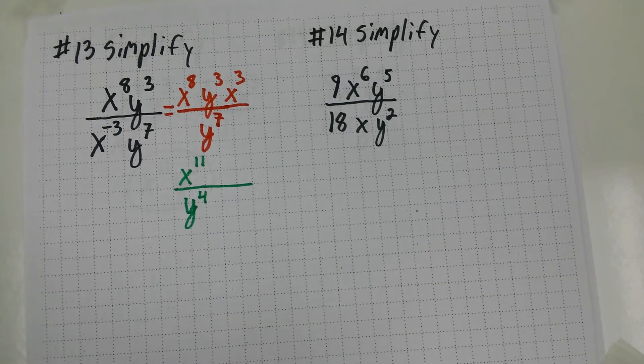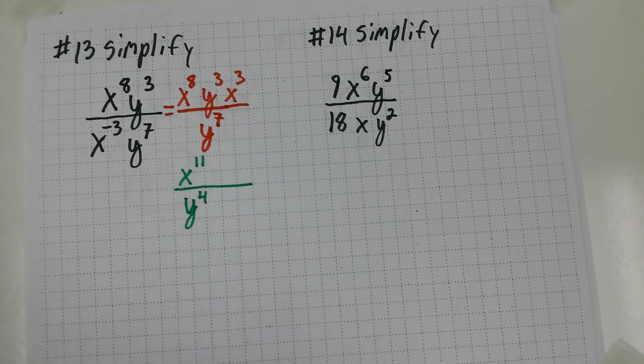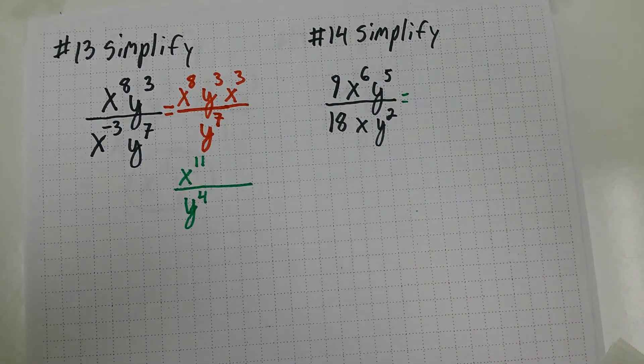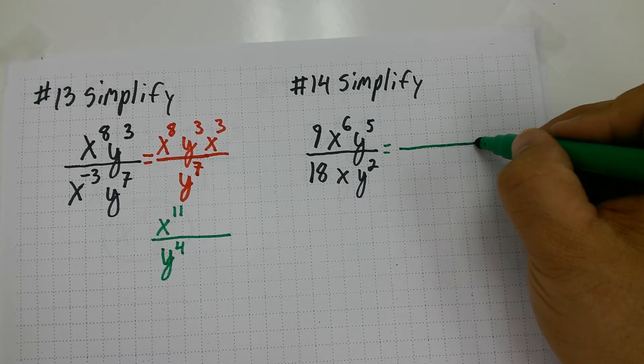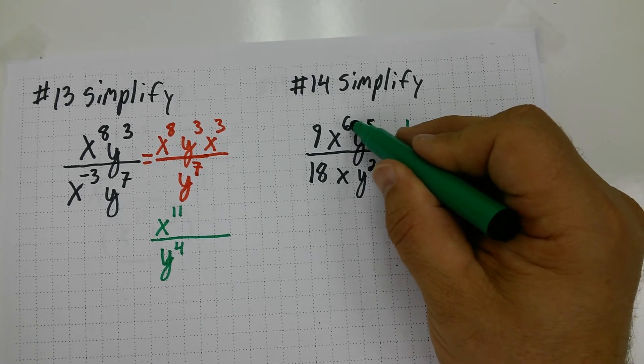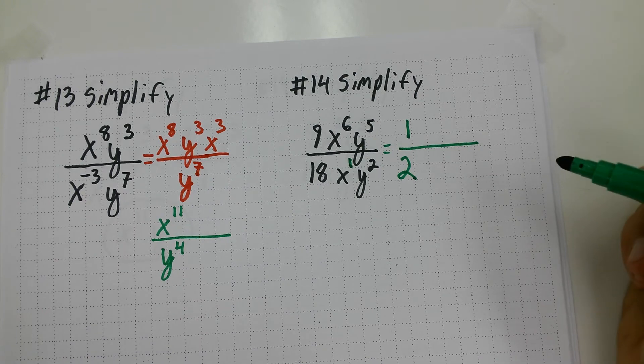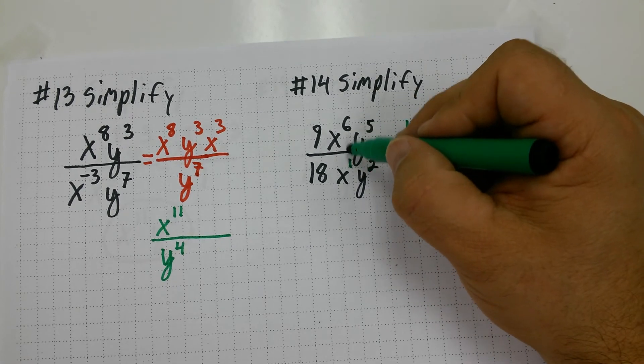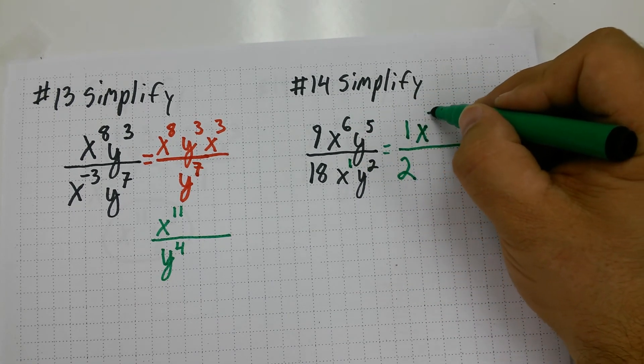For number fourteen, again, we have to simplify. I'm going to deal with the digits first before I deal with any of the exponents. Let's take a look here. Nine over eighteen. I believe that simplifies to just one half. Now I have an x to the sixth and an x to the first on the bottom. I'm going to subtract the exponents. And x to the sixth is more powerful. So it's going to be six minus one. So that's five. So x to the fifth is going to go upstairs.